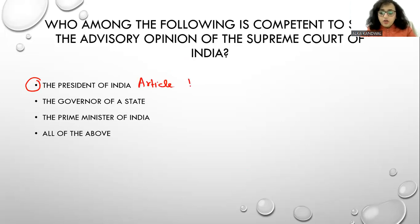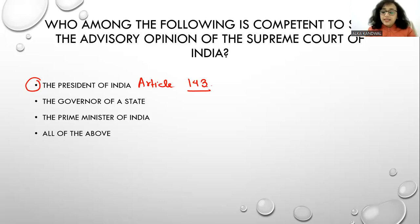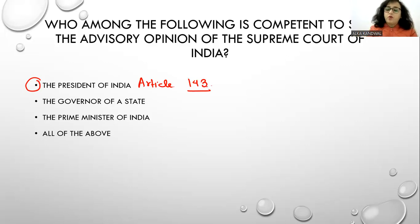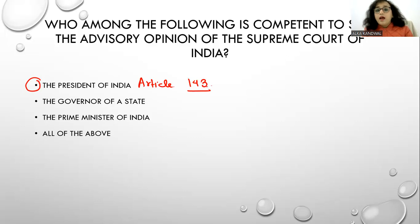Article 143 of the Indian Constitution empowers the Supreme Court with advisory jurisdiction. The President can seek the Supreme Court's advice if any issue of public importance arises, as he is competent to seek the advisory opinion.